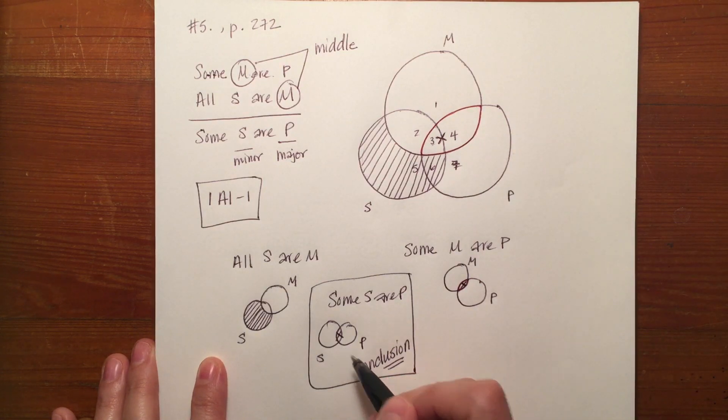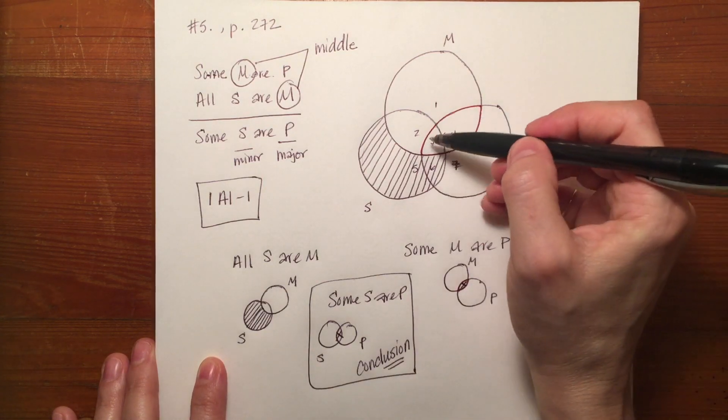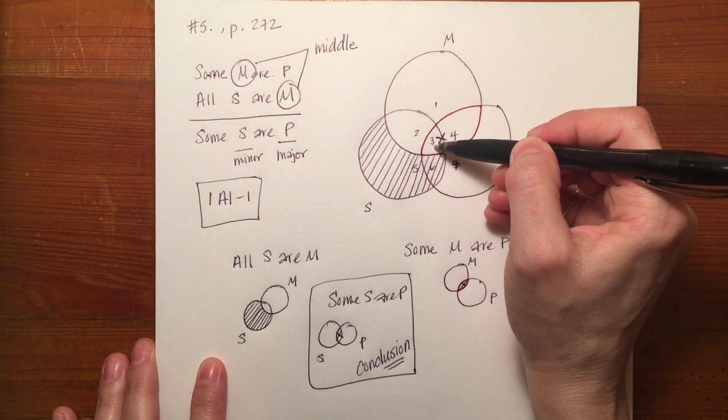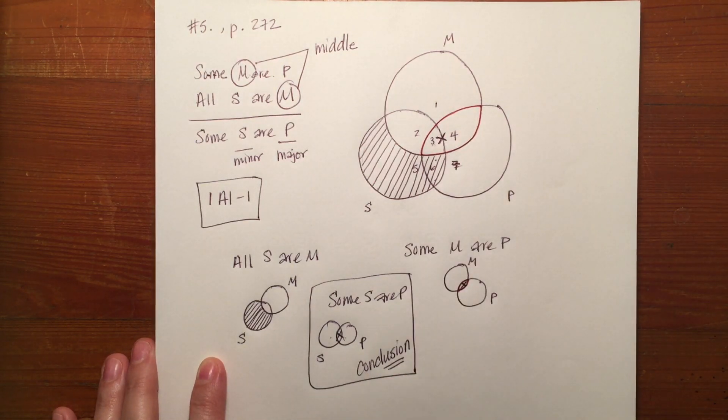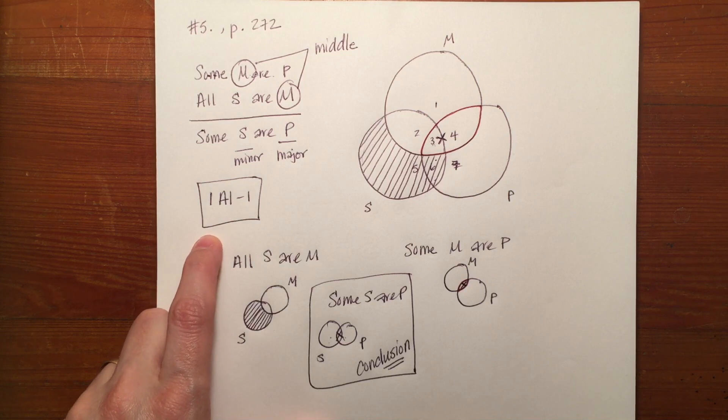So we're pretty sure that it's going to be invalid from both perspectives because there's no x here in areas three and six where it should be. But let's double check with mood and figure.